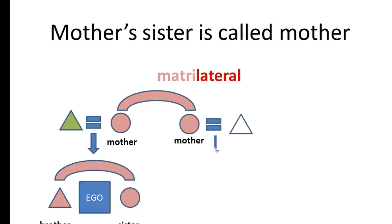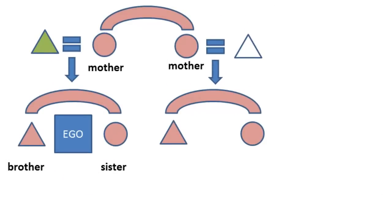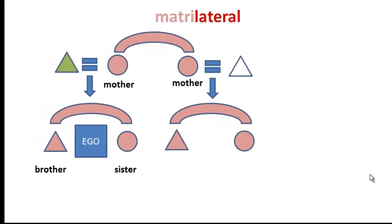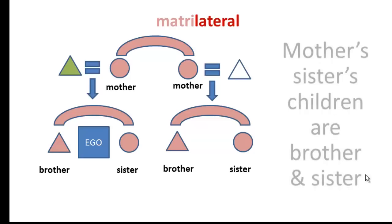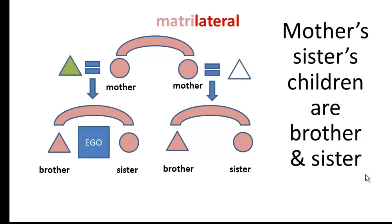Now let's give mother's sister some offspring — a son and a daughter. From the perspective of Ego, who calls mother's sister 'mother,' he's going to call mother's sister's children his matrilateral parallel cousins: brother and sister. So the parallel cousins are called by sibling terms, and the term for the parent is applied to the parallel siblings of the parent. These are the keys to an Iroquois Kin Terminology.